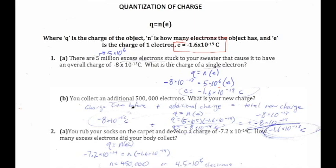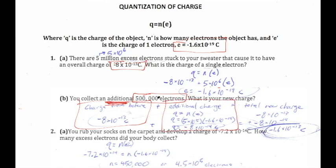For part b: you collect an additional 500,000 electrons — what's your new charge? We can't just solve for those 500,000 electrons alone; we have to add them to the original charge we already had. So we find the charge of the additional 500,000 electrons and then add it to the original. 500,000 equals 5×10⁵.